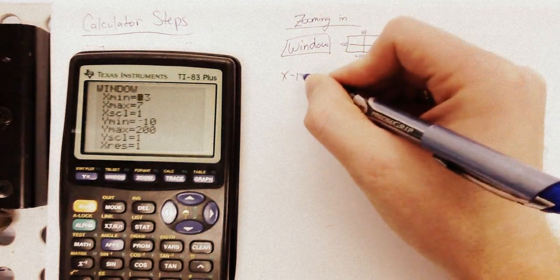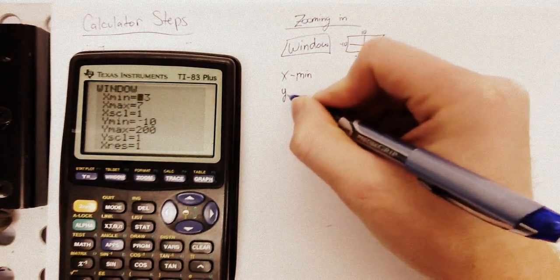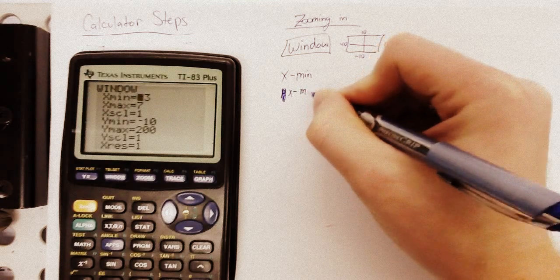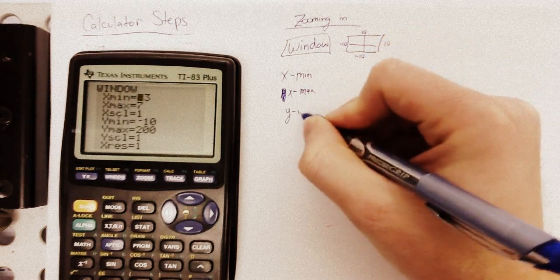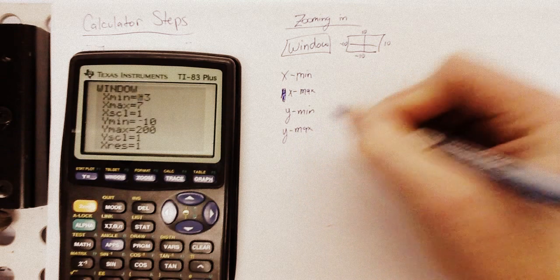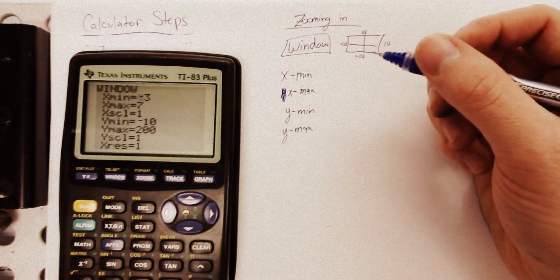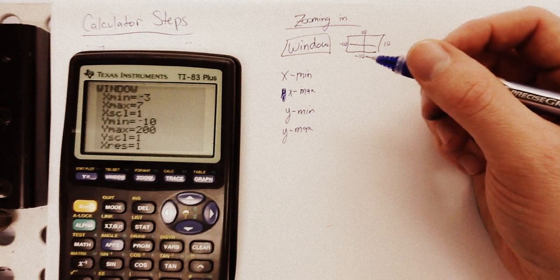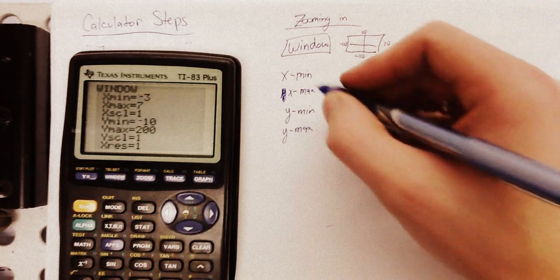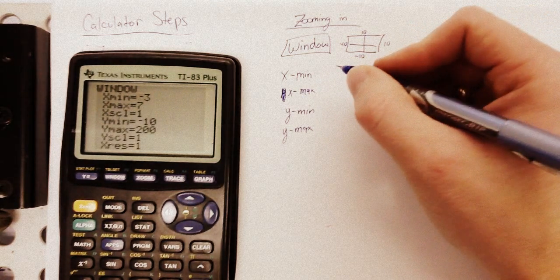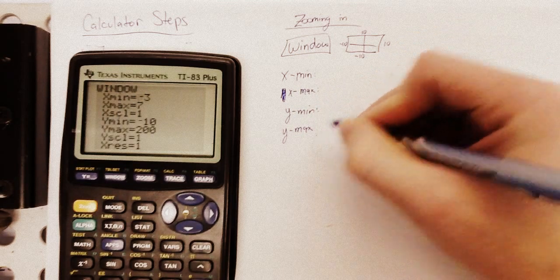The things you care about, the minimum x, and the maximum x, and the same thing for y. Minimum y, maximum y. Those are the things you care about. The rest of it, don't touch it. You can mess the graph up a little bit. Not too bad, but don't touch it. So, change your x maximum and minimum. Same thing for y.